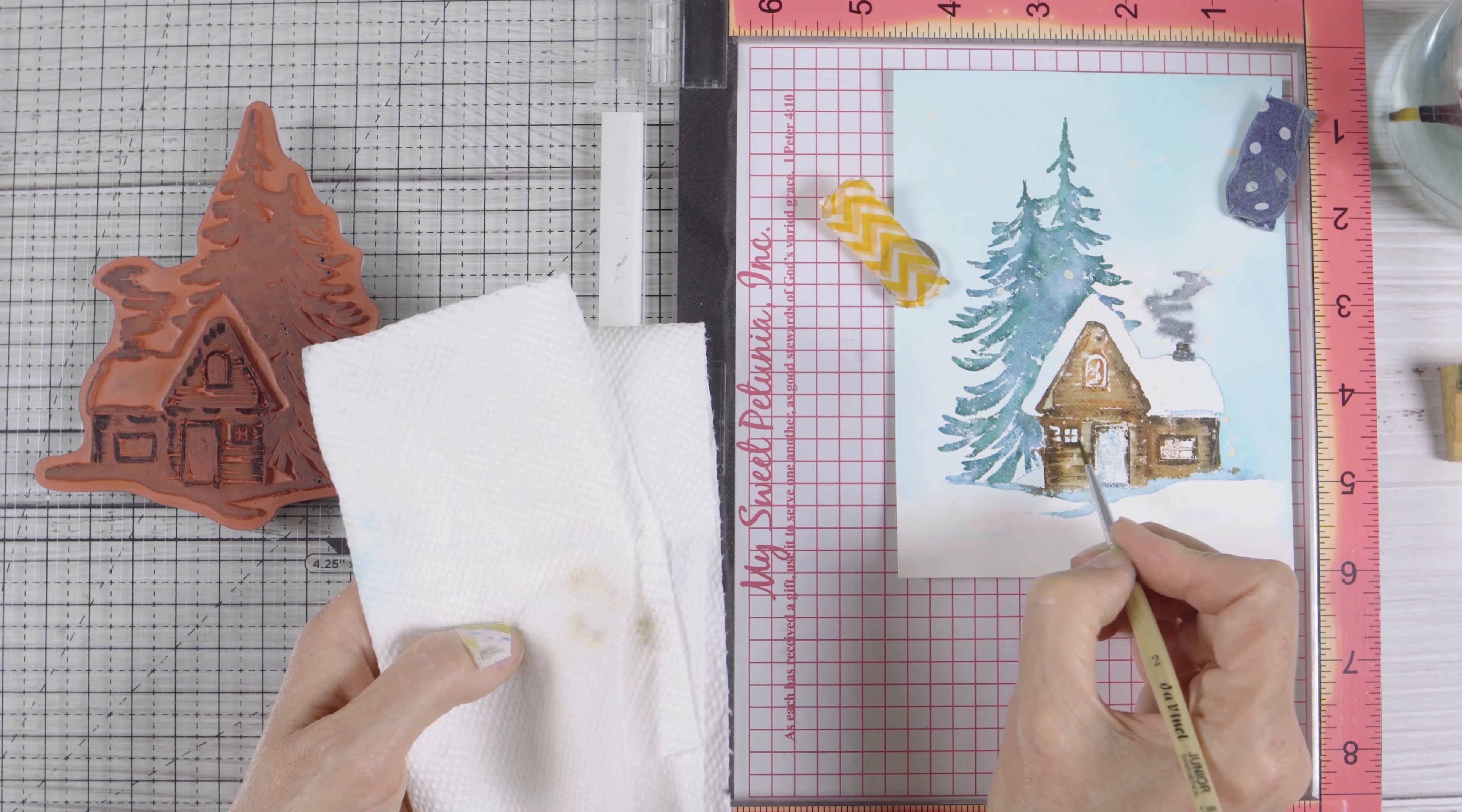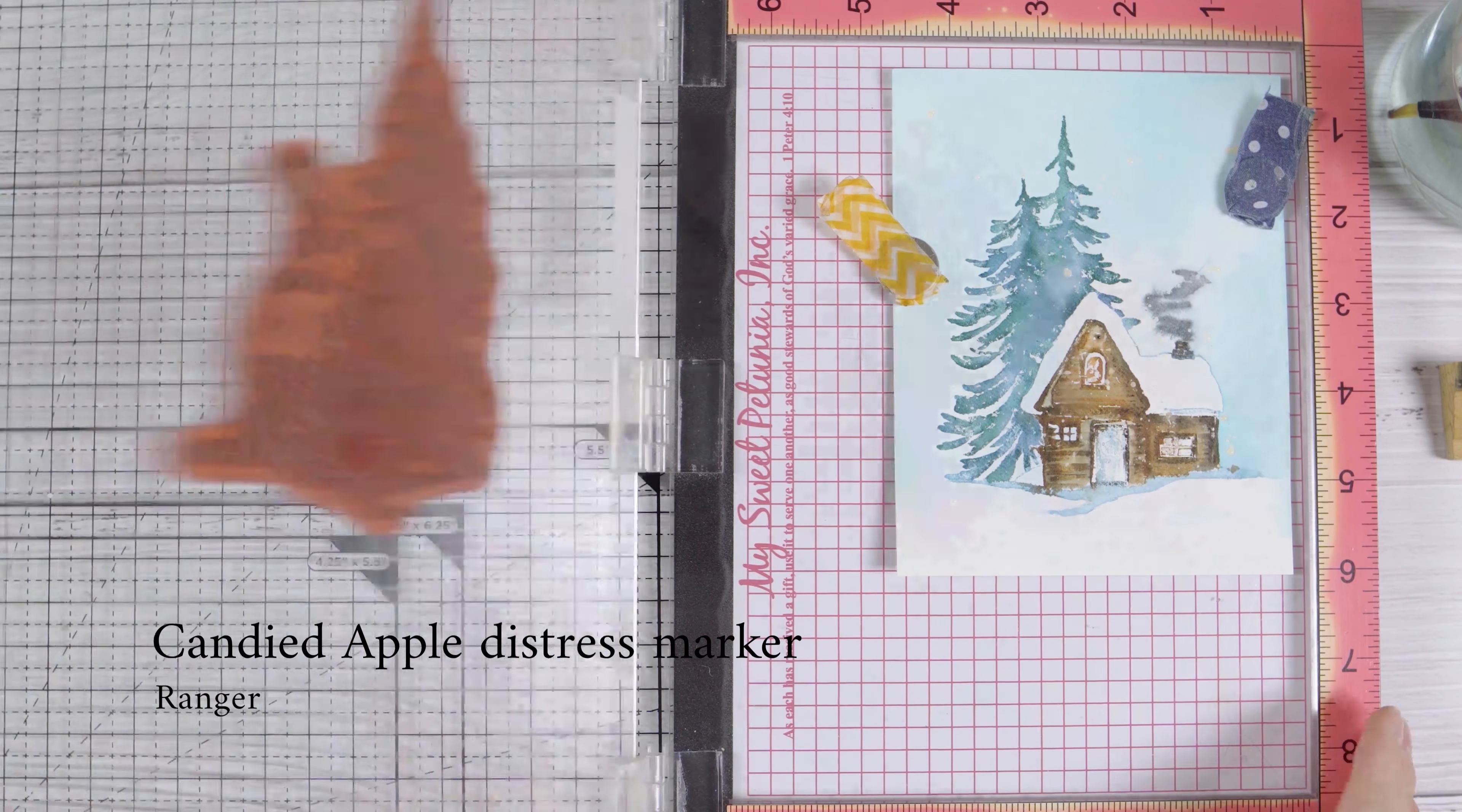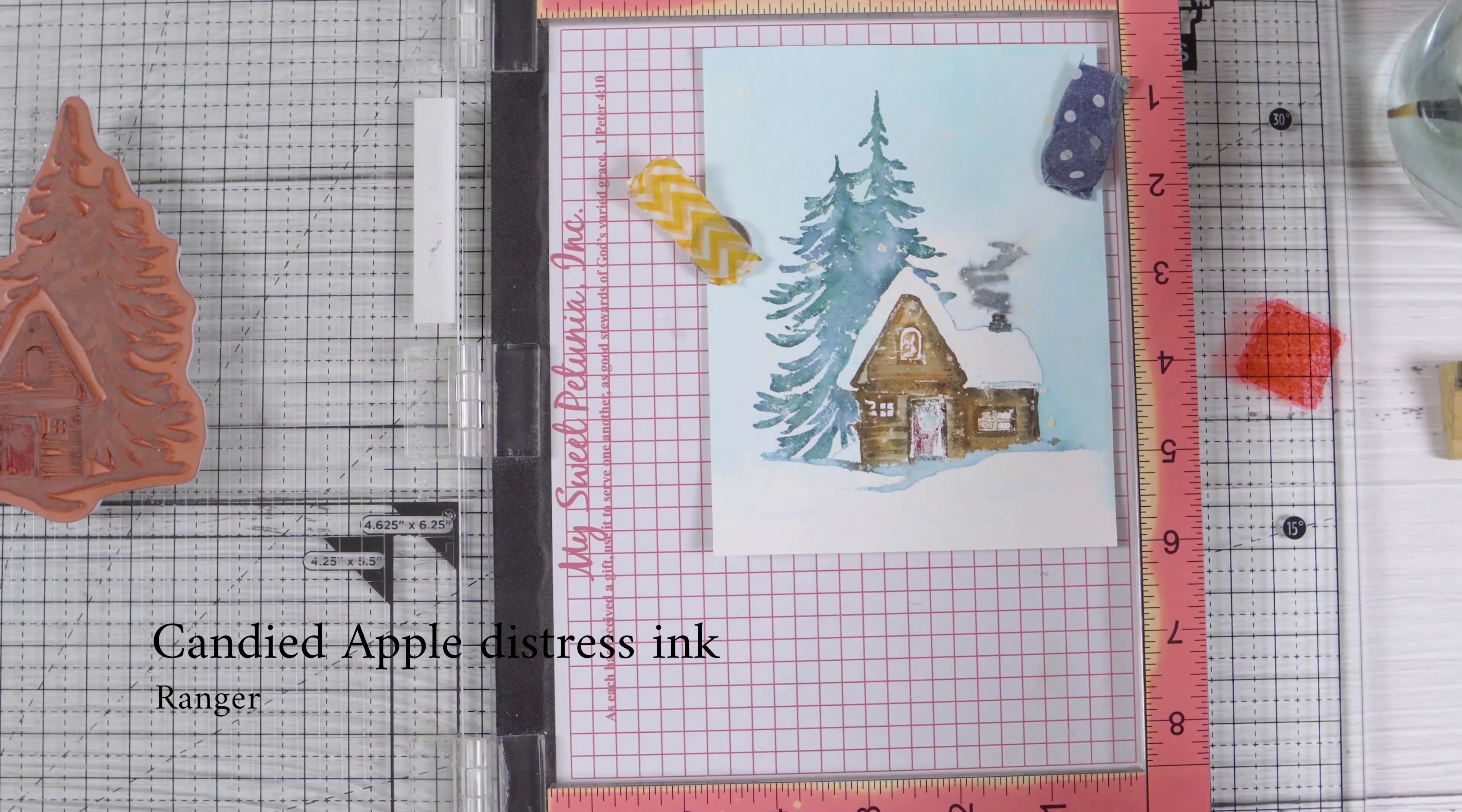I want my door of my cozy cottage to be bright red because I think that will be festive and happy. So I've stamped that with candied apple distress ink, and then I'm giving myself a little extra on the mat so that I can really fill that door in.